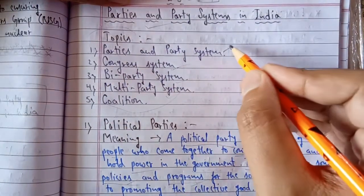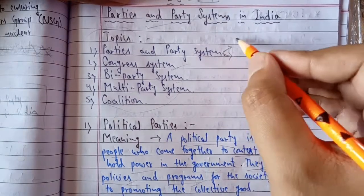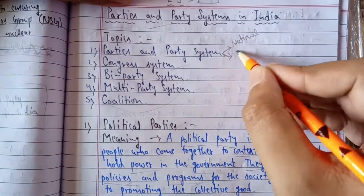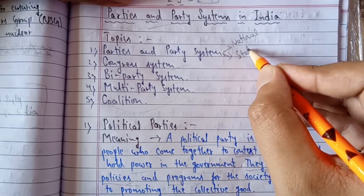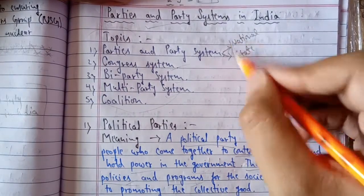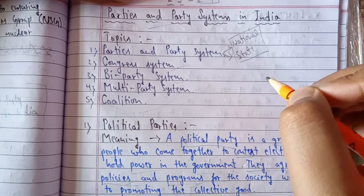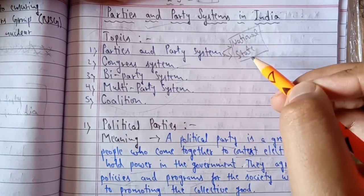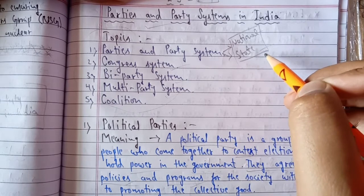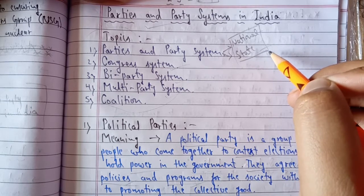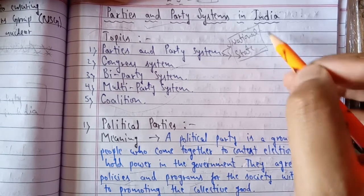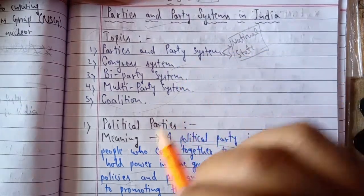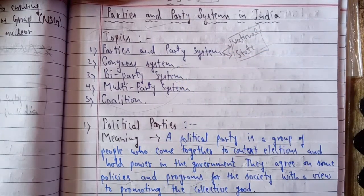With this we have covered the first topic — Parties and Party System in India — including national and state parties in overview. In the next video we will study in detail which are the eight national parties of India and the 52 state parties. After that we will start with the Congress System. Thank you.